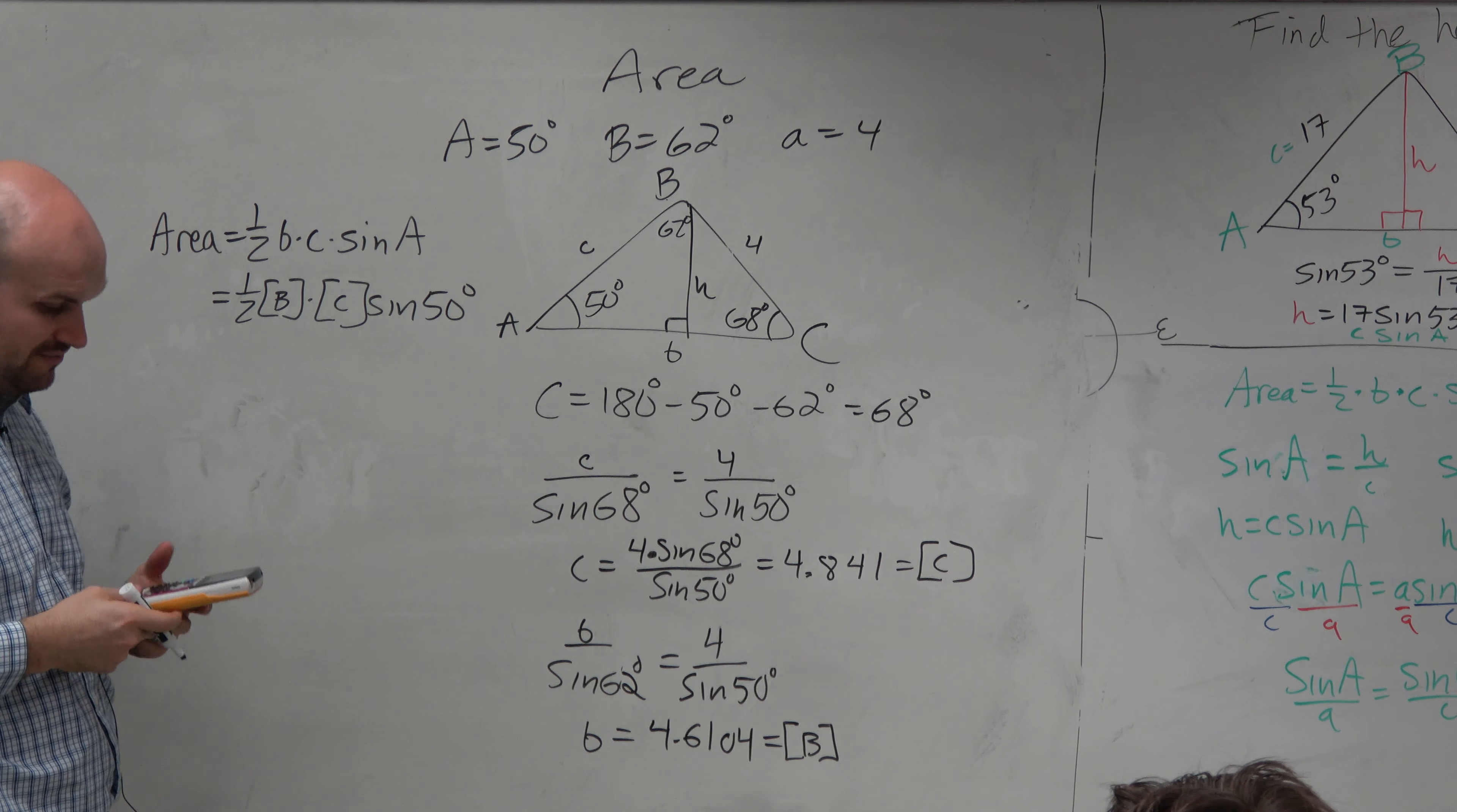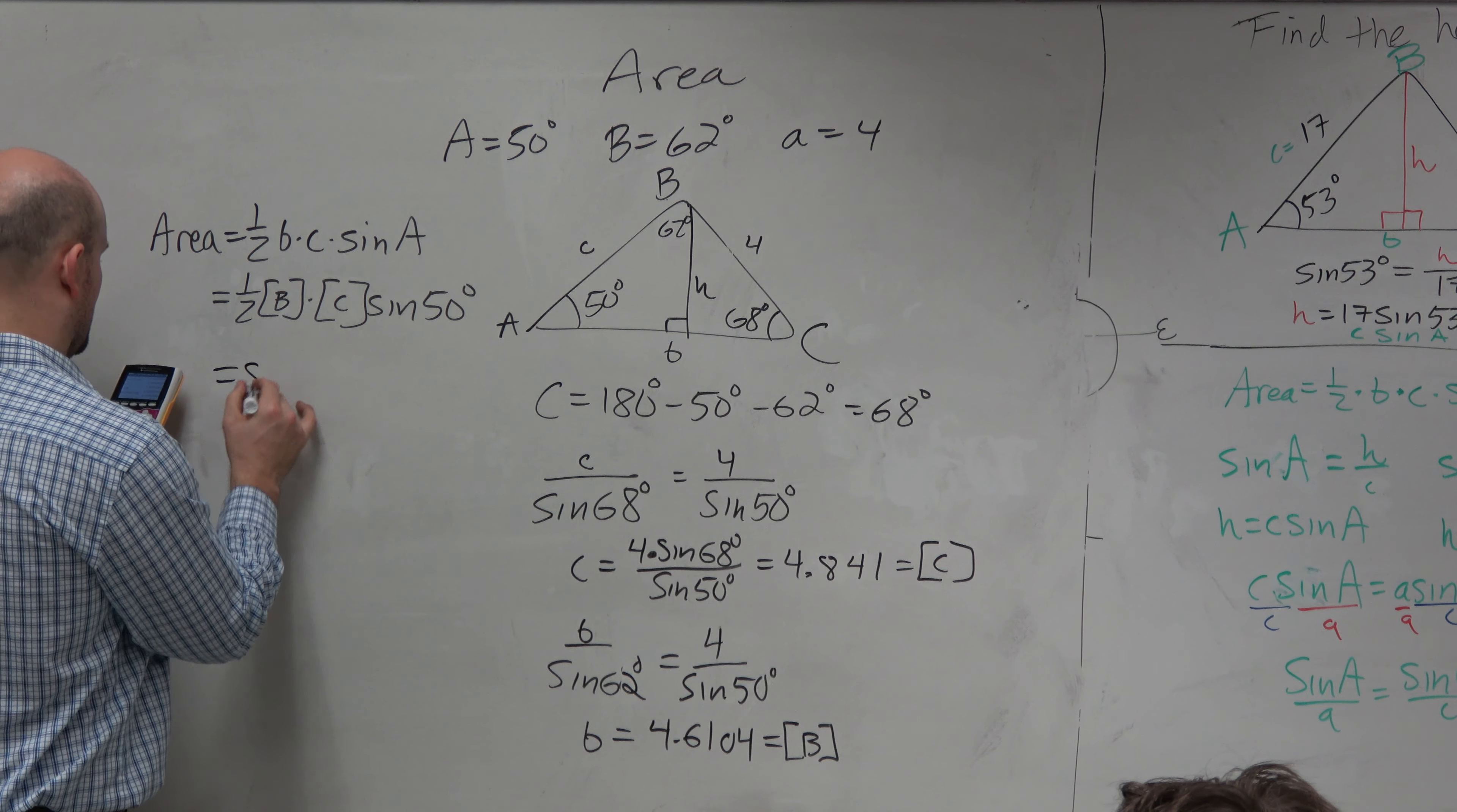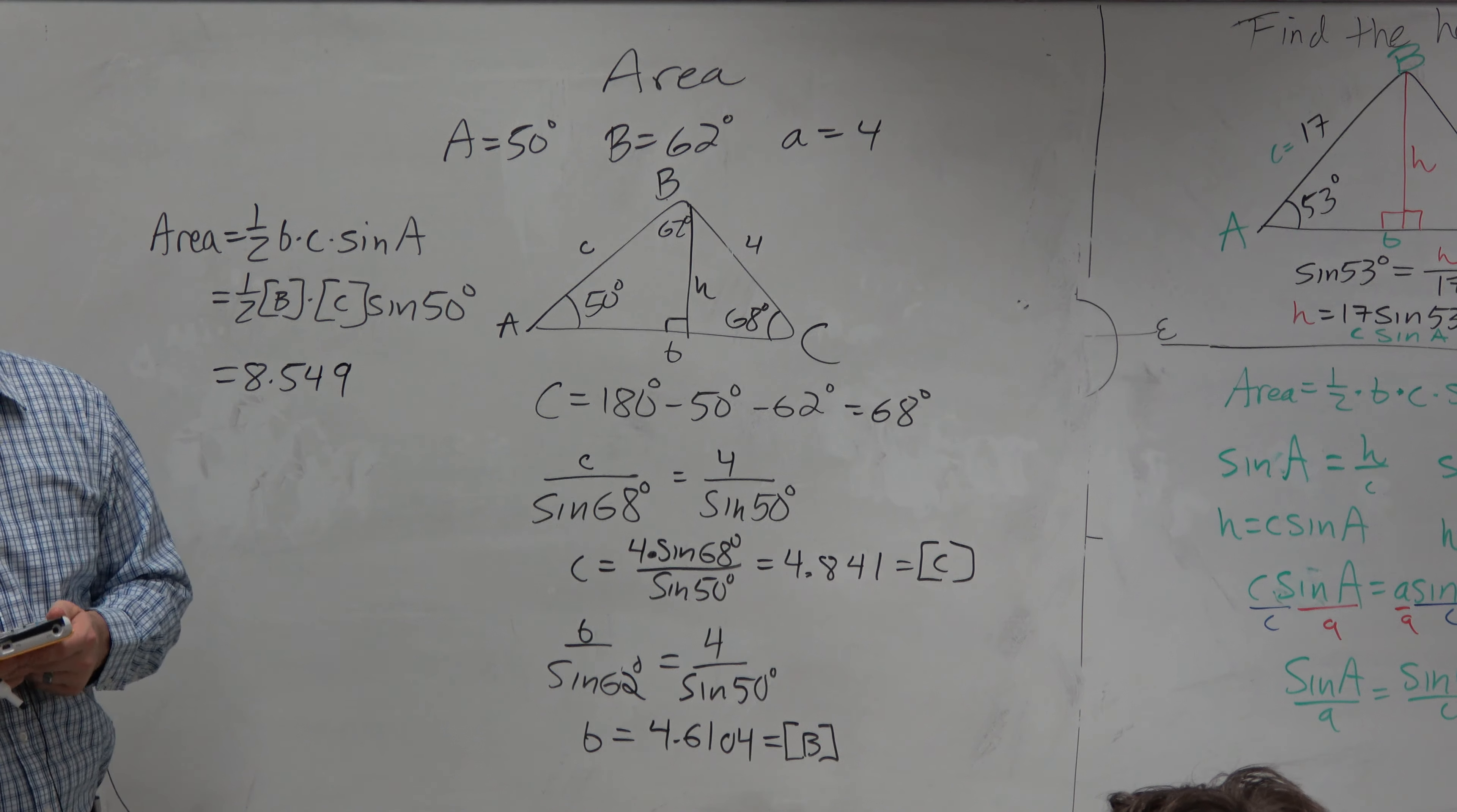Now, I need to use my stored B times my stored C times the sine of A, which is 50 degrees. So that's what I'm going to type in my calculator. I'll do 0.5, which is 1 half, times alpha B times alpha C times the sine of 50. And you should get 8.549. And then that would be unit squared. Yes?